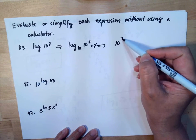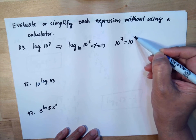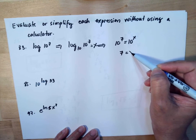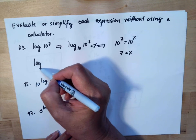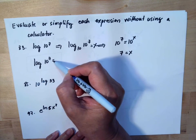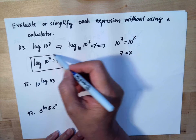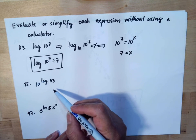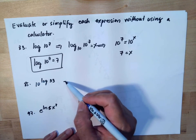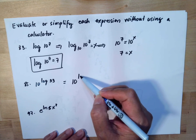Make it exponential, so assuming this equals x, we have 10 to the 7 equals 10 to the x, meaning 7 equals x. So log of 10 to the 7 equals 7.